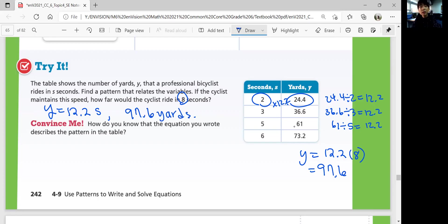Convince me. How do you know that the equation you wrote describes the pattern in the table? You can check each pair of values in the table that makes the equation true. So you can check if 2 times 12.2 is equal to Y and 3, 5, 6, and everything. And if it does make sense, it will be consistent.